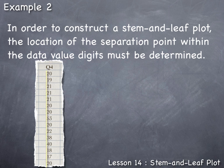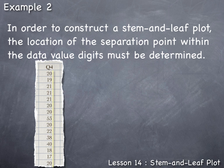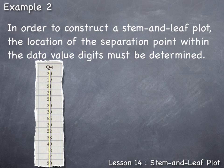You could choose to separate data values between the hundreds and the tenths place, but since nobody was in their hundreds, leading zeros would be needed in the stem. Or you could separate between the ones and the tenths place, but since nobody reported ages in tenths of a year, trailing zeros would be needed. The best choice is separating between the tens and the ones place value, which will produce a good stem and leaf plot. We'll draw our vertical line representing that separation.